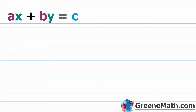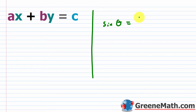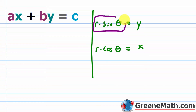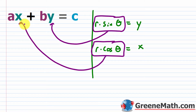To go from rectangular form to polar form, it's very simple. We use the relationships that sine of theta equals y over r (opposite over hypotenuse) and cosine of theta equals x over r (adjacent over hypotenuse). Multiplying both sides by r gives us y = r·sinθ and x = r·cosθ. We'll substitute r·cosθ in for x and r·sinθ in for y — that's all you need to do.